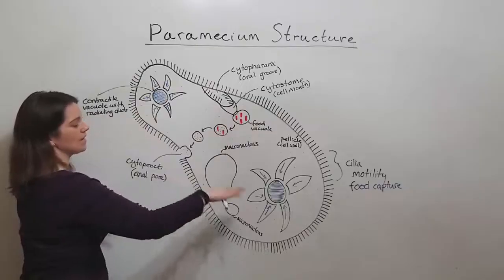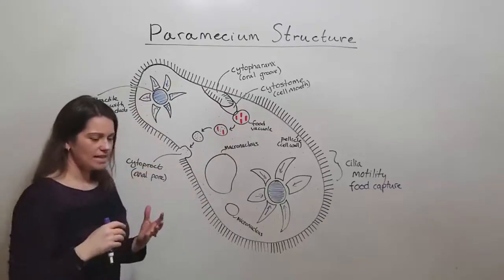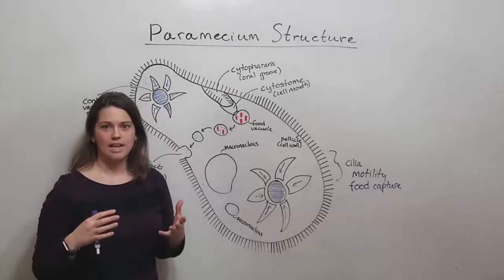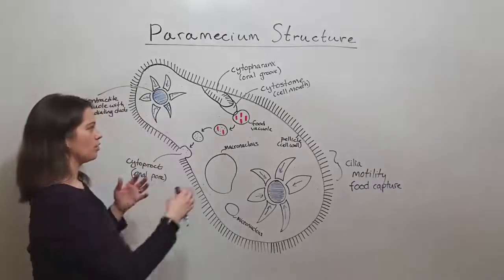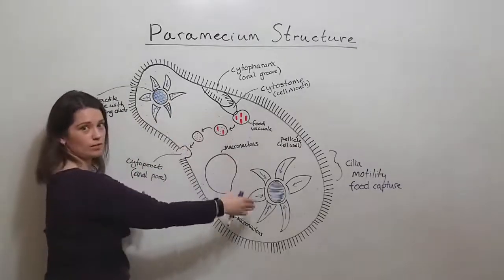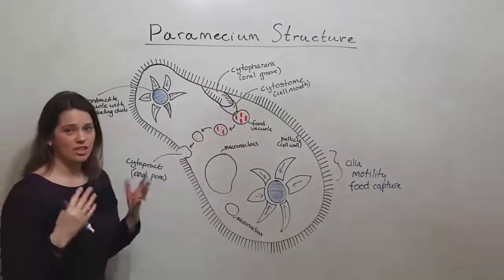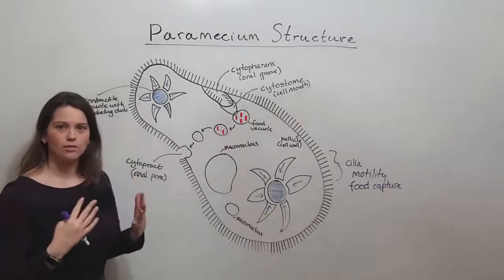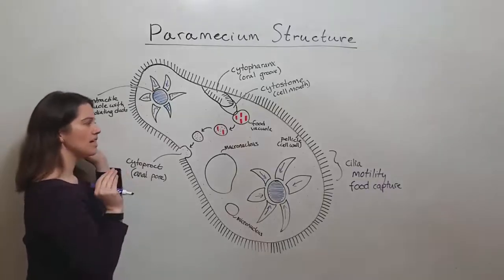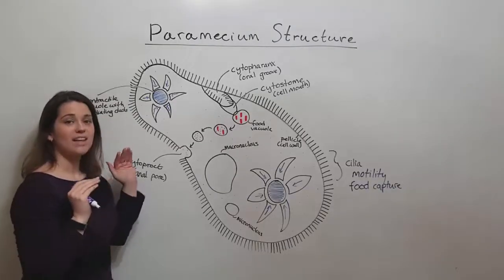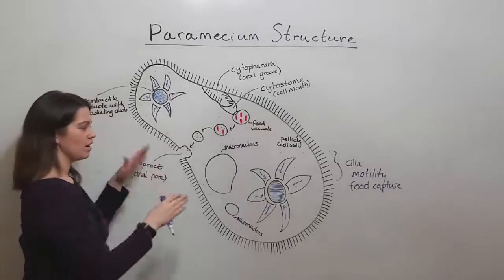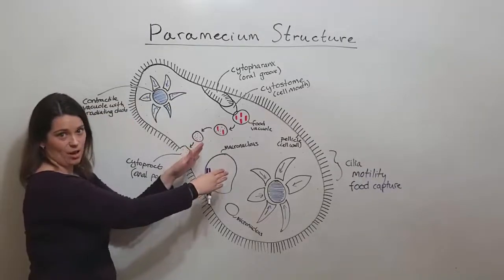Remember that paramecium is living inside a hypotonic environment, and what this means is that there's a lot of things dissolved in the paramecium cell, and outside of it, there's not much else in the water, just a lot of water. And so water is constantly wanting to flow down its concentration gradient from outside the cell to inside the cell.